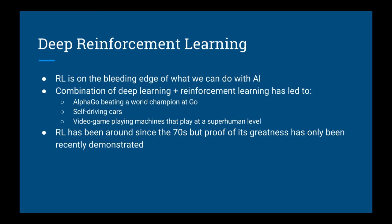If you've taken my first reinforcement learning class, then you know that reinforcement learning is on the bleeding edge of what we can do with AI. Specifically, the combination of deep learning with reinforcement learning has led to AlphaGo beating a world champion in the strategy game Go, it has led to self-driving cars, and it has led to machines that can play video games at a superhuman level. Reinforcement learning has been around since the 70s, but none of this has been possible until now.